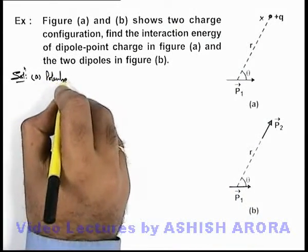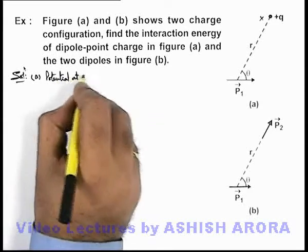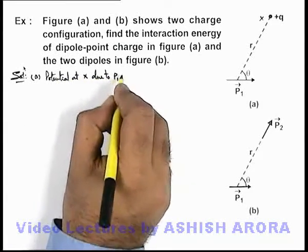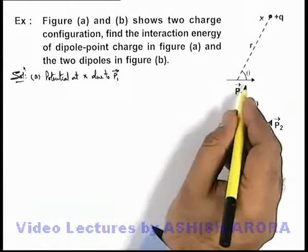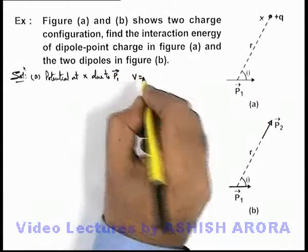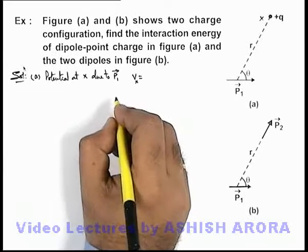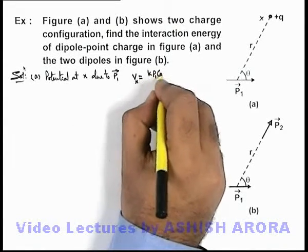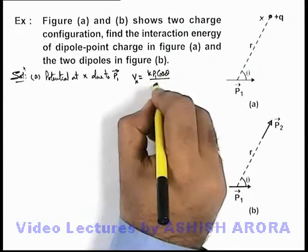We calculate potential at x due to p1 vector, this is the dipole moment. This can be written as V at point x is equal to the value k p1 cos theta by r squared.